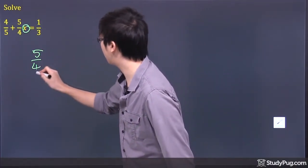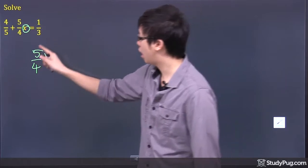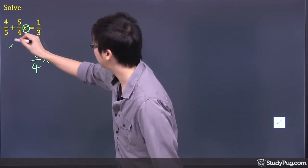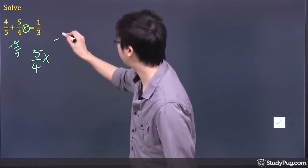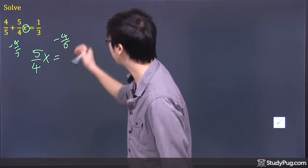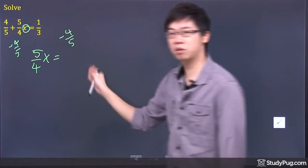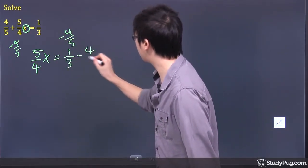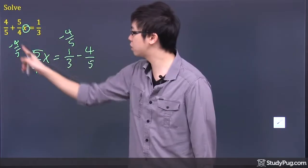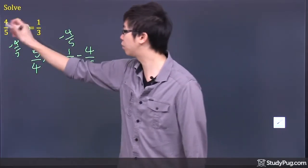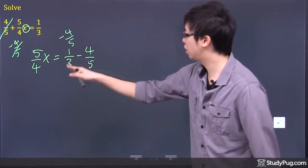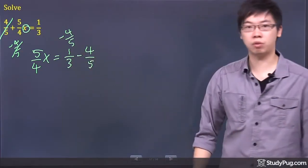So what we'll do is we'll keep 5 over 4x as it is, and we're going to subtract 4 over 5 from both sides. So we're going to subtract the 4 over 5 from this side and from this side. So now it is still mathematically the same thing. If you subtract the 4 over 5 from here, that 4 over 5 is gone from the question. Then it's just 1 over 3 minus 4 over 5.